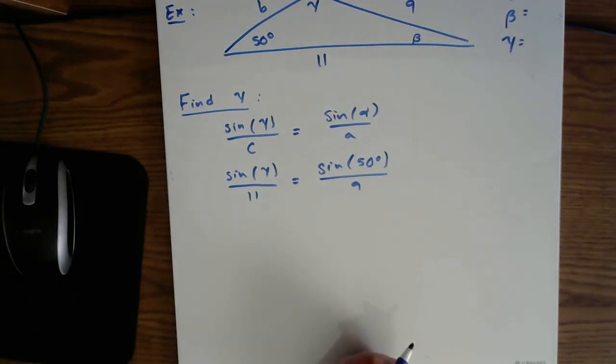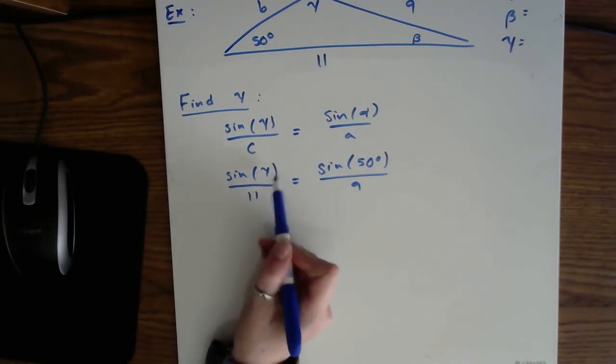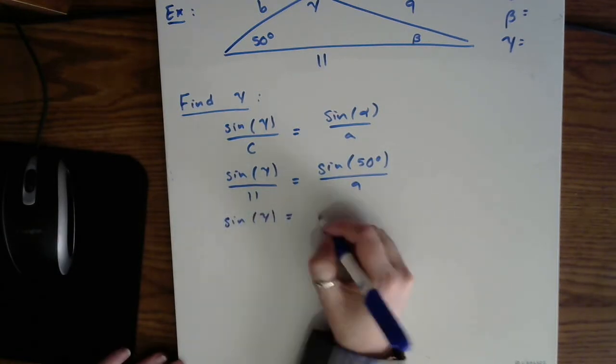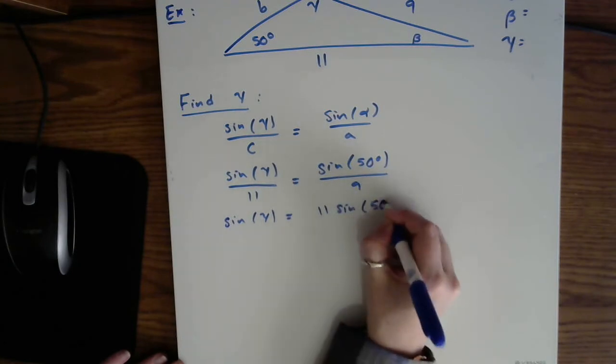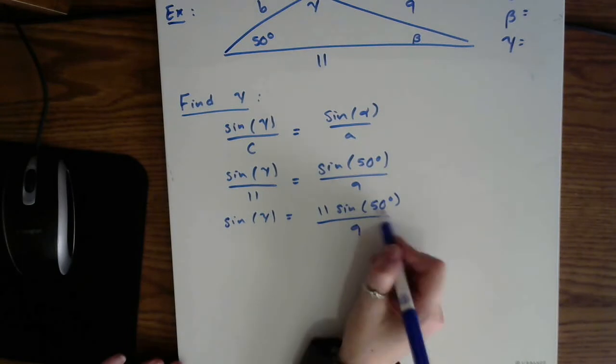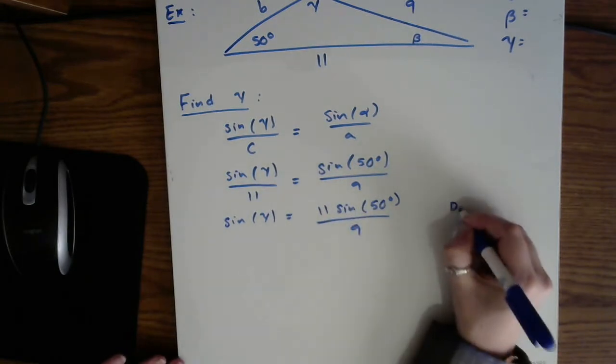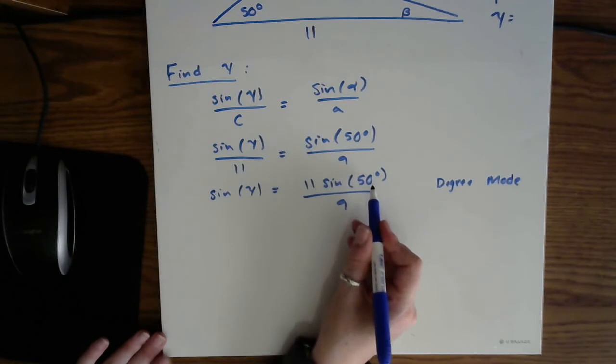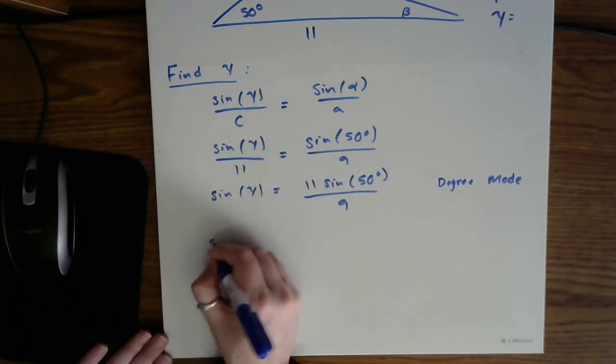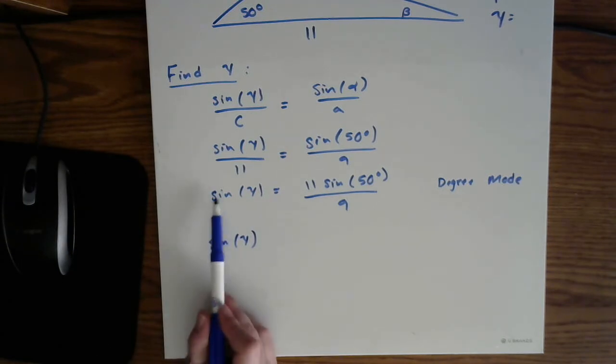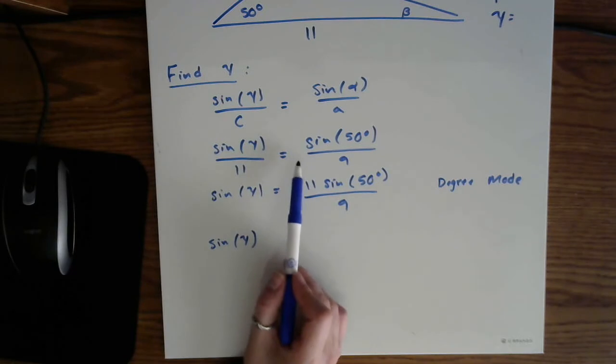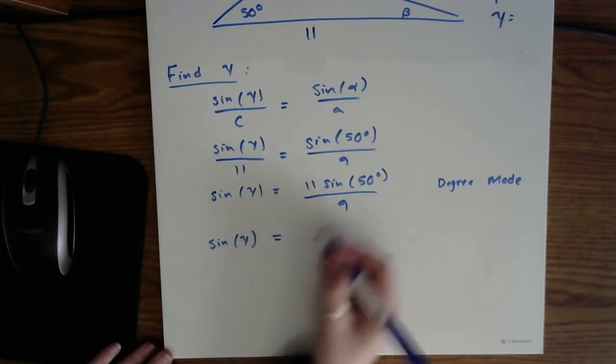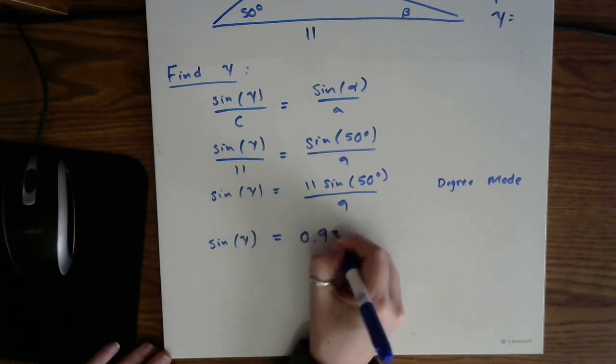So my job is to isolate the component that contains gamma. So what we will do is multiply the 11 to the other side. 11 sine of 50 degrees over 9. Plug this into your calculator. Make sure that you are in degree mode. Otherwise, your answer will not be correct. So check your calculator is in degree mode. So on the left hand side, I still have sine of gamma. Now remember, it truly is the sine of gamma. All we did was multiply the 11 over. So continue writing the sin out in front. Then go ahead and write in the decimal for this, which was 0.9363.